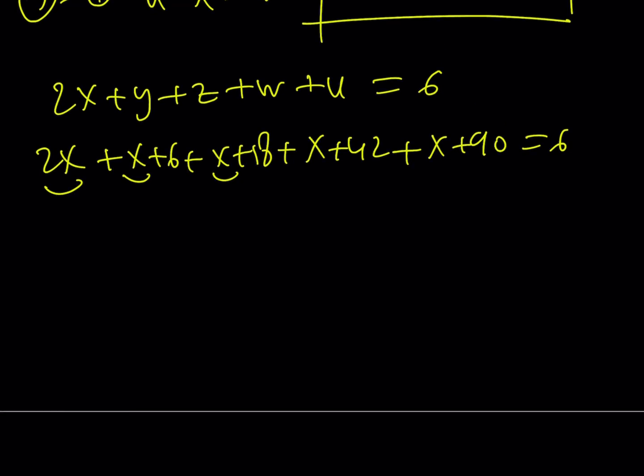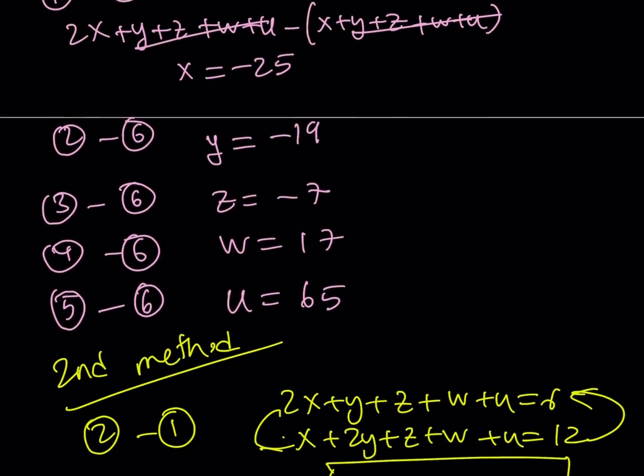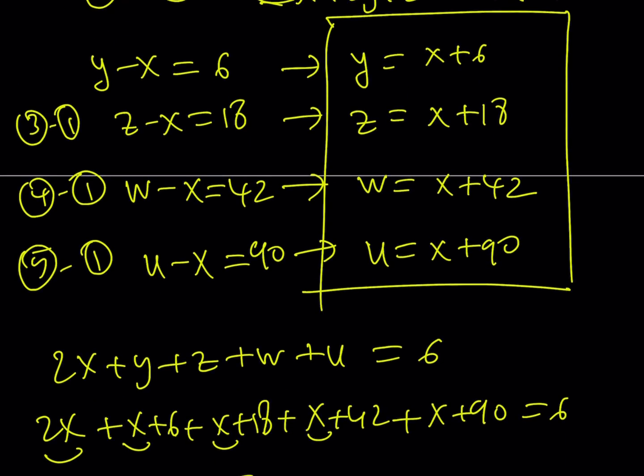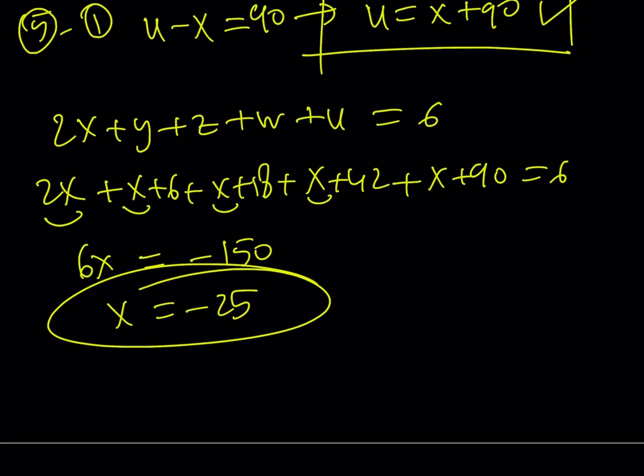Let's go ahead and add these up. And we're going to be getting something similar. This is going to be 6X. And the sum here is going to become 6 plus 18, which is 24. And 24 plus 42 is going to be 66. And 66 plus 90 is going to be 156. And if you subtract 6 minus 156, you're going to get negative 150. And that's going to give you X equals negative 25. And did we get the same answer? Yeah, we did. So, now, you can go ahead and replace X with what it is and find all these variables.